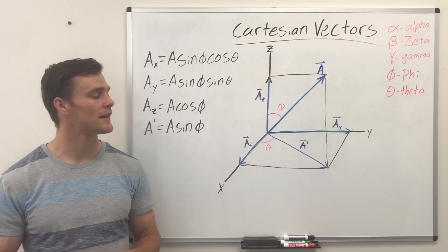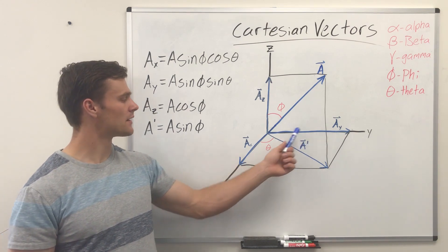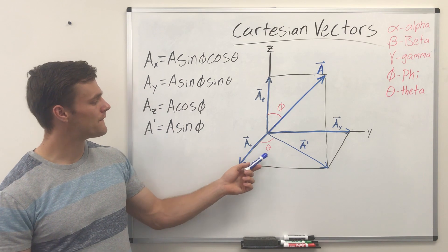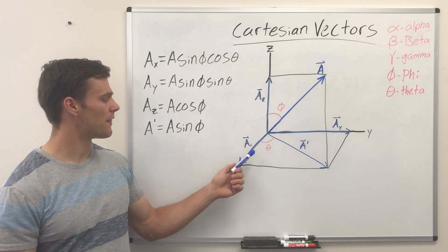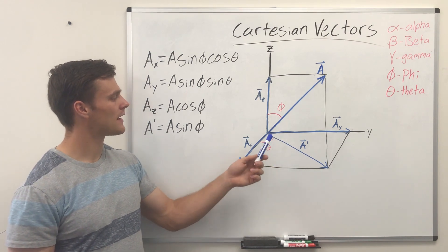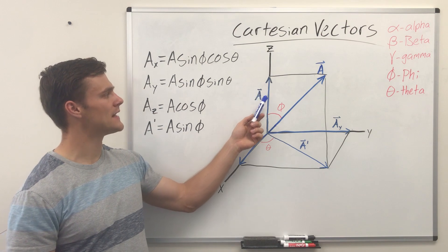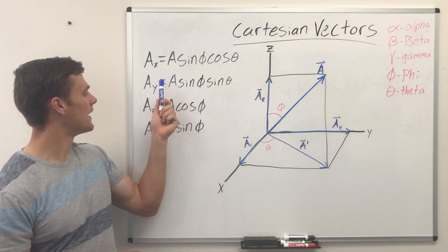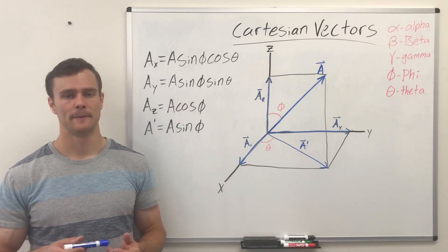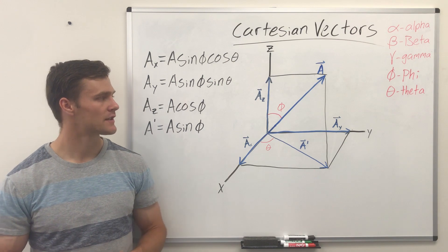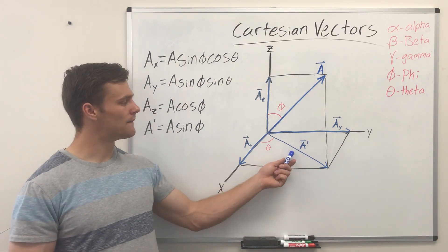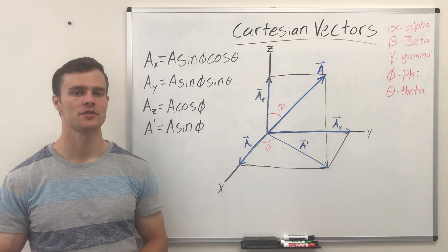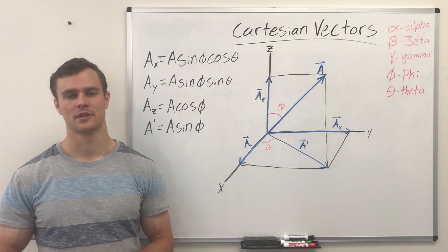Here are a few more equations that might be helpful. We introduce A prime, which goes from one corner to the other corner of the square formed by A sub x and A sub y, and a couple more Greek letters — theta and phi. Theta goes from the x-axis over to A prime, and phi goes from the z-axis over to vector A. You can use these to find the different components of A. Sometimes a problem gives you the value for A prime, some of these angles, or the components and asks you to solve for different things — the more formulas you have, the more you're able to solve.